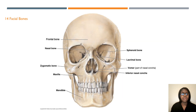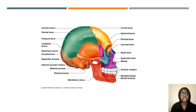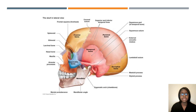Know that there are 14 facial bones, and know where they are and how to identify them on a CT image. Also make sure that you know your sinuses. This is a sagittal image — just make sure you know where all of this can be found on the CT image.